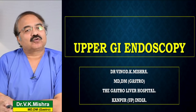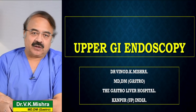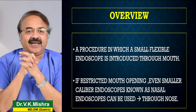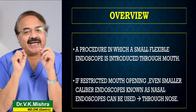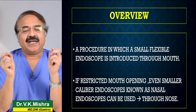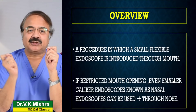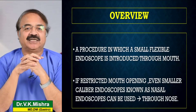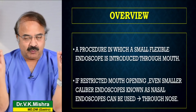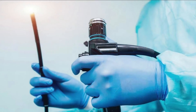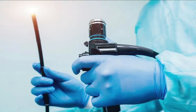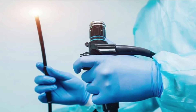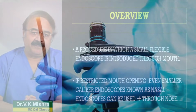आज मैं upper GI endoscopy के बारे में बात करूँगा। जहां तक upper GI endoscopy का सवाल है, यह एक ऐसी procedure है जिसमें एक पतली rubber जैसी tube आपके गले के रास्ते से पास की जाती है। यह जो पतली सी tube होती है, वास्तव में यह बहुत sophisticated instrument होता है जिसे हम upper GI endoscopy कहते हैं।